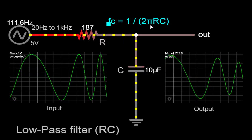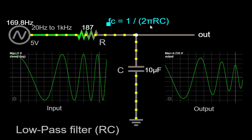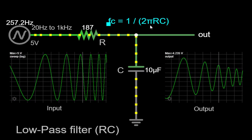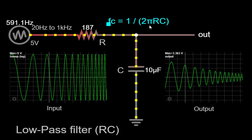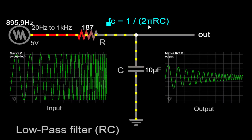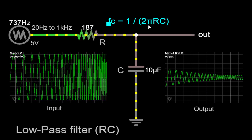It's worth noting that RC low-pass filters have a roll-off characteristic, meaning that the attenuation of higher frequencies gradually increases beyond the cutoff frequency. The rate at which the attenuation increases is determined by the order of the filter.